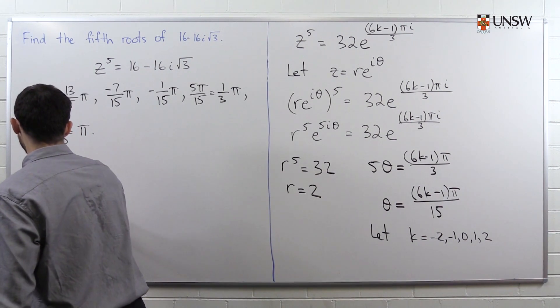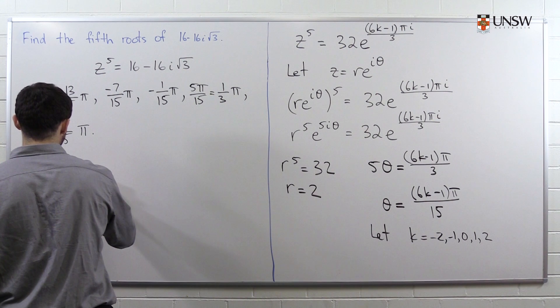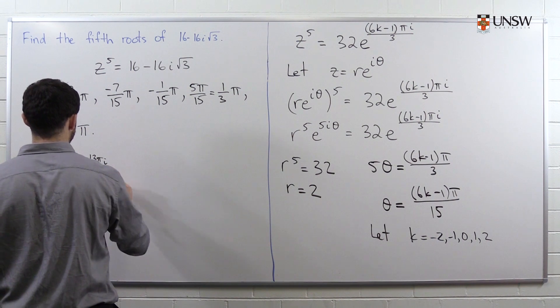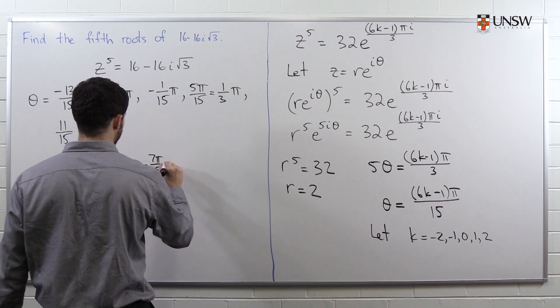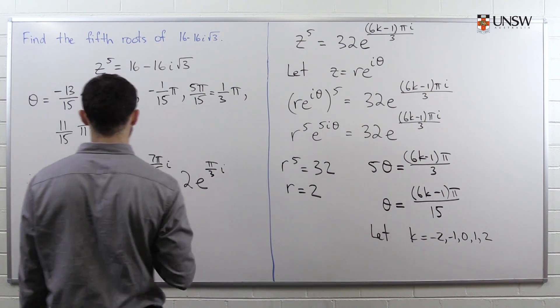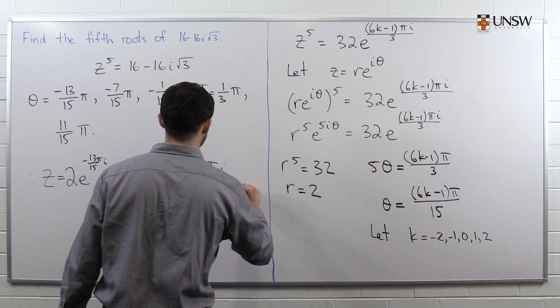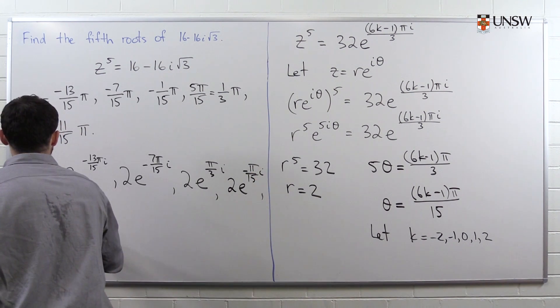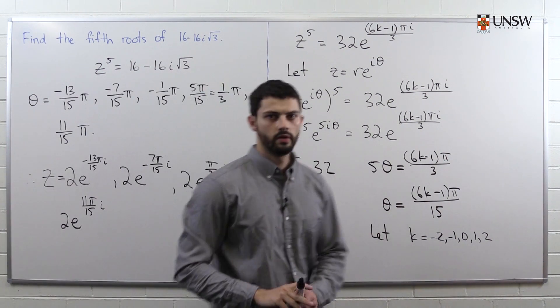So we're almost done. Now it's just time to write down the answer. So the five answers are, they all have modulus 2: 2e^(-13π/15 i), 2e^(-7π/15 i), 2e^(-π/15 i), 2e^(π/3 i), and 2e^(11π/15 i).